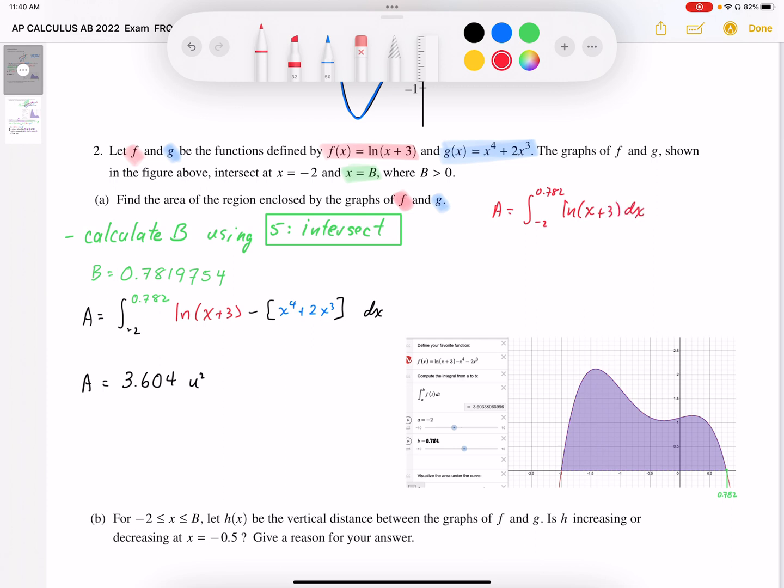And that area works out to be, if we do the bounds, we're going to end up with an area of 2.249. And then we could subtract the lower bound,